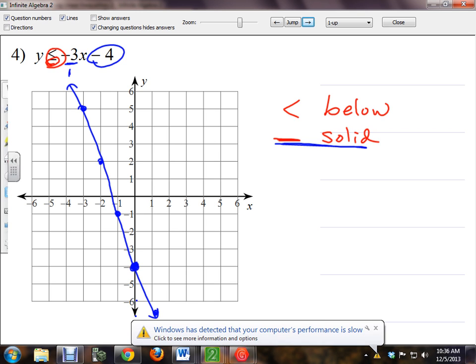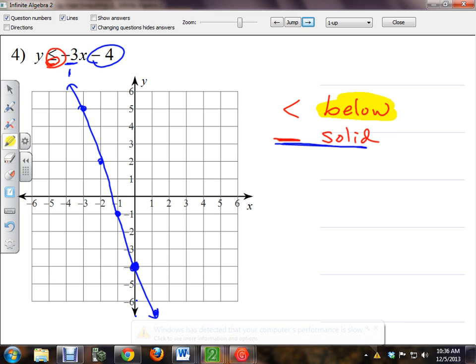The next part is talking about shading. The shading is going to be below here, because it's a less than symbol. So which side of this is below the line? The left side. The left side is below the line, and we will color in this entire thing. Now remember what I told you yesterday about determining if it's above or below. Below means under or down, right?